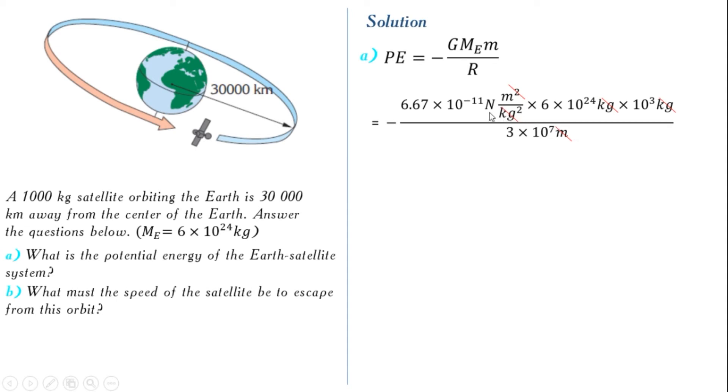And now we will cancel these meters and also kilograms. As a unit, we have Newton times meter, which is joules. After the calculation of these numbers, we get the answer as gravitational potential energy is equal to negative 13.34 times 10 to the power of 9 joules.